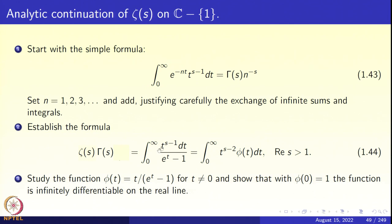I write t^{s-1} as t^{s-2} · t, and the factor t/(e^t − 1) I call φ(t). The next exercise: look at φ(t) = t/(e^t − 1) for t ≠ 0 and φ(0) = 1. With this prescription at the origin, φ(t) is an infinitely differentiable function on the real line. You can think of φ as a holomorphic function of t — it will be holomorphic in a strip containing the real line.